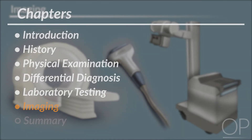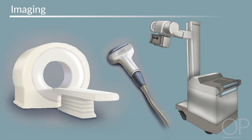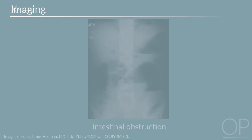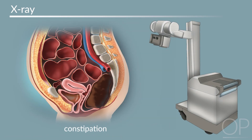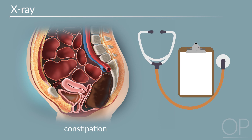Multiple imaging modalities exist for evaluating abdominal pain. If history and physical exam is concerning for intestinal obstruction, abdominal radiography may show signs of air-fluid levels and paucity of air in the rectum. An abdominal x-ray should not be performed to evaluate for constipation; instead, a history and physical examination should be used to determine if a patient is constipated.